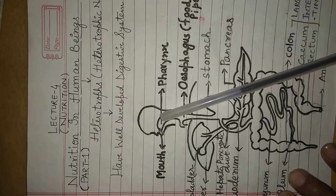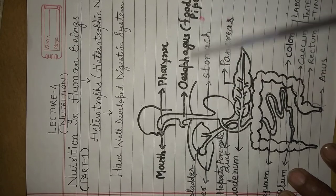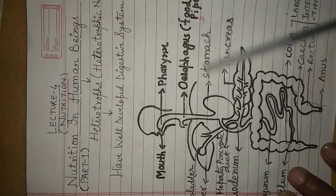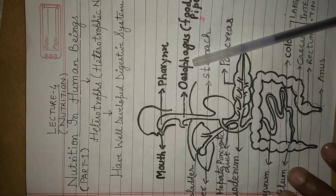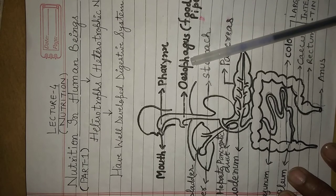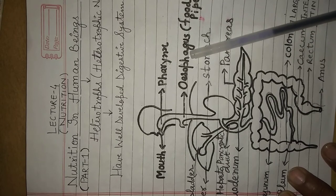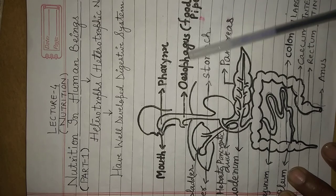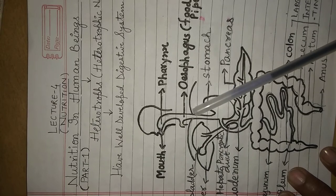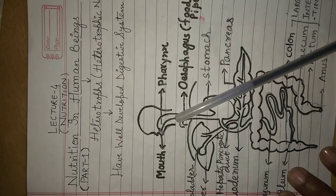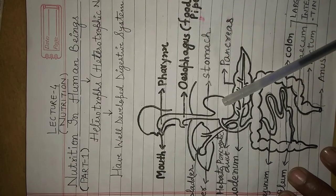Now this bolus comes into the esophagus. Jab yeh bolus esophagus mein pass on hota hai, toh esophagus ise stomach tak kaise pahunchati hai? Esophagus ki jo inner muscular lining hoti hai, usme ek special type ka movement hota hai, aur us special movement ko hum peristalsis movement kehte hain. Peristalsis movement ek wave-like movement hota hai jo ki esophagus ki inner lining perform karti hai, aur yeh wave-like movement mouth cavity se bolus ko stomach tak pahunchane ka kaam karti hai.